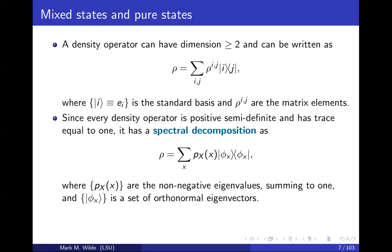So one thing from linear algebra that we know is that since every density operator is positive semi-definite, which means in particular that it's Hermitian, it has a spectral decomposition of this form where these p_x's are eigenvalues, and they can be interpreted as probabilities so that they're non-negative and that they sum to one. And these |φ_x⟩'s are orthonormal eigenvectors.